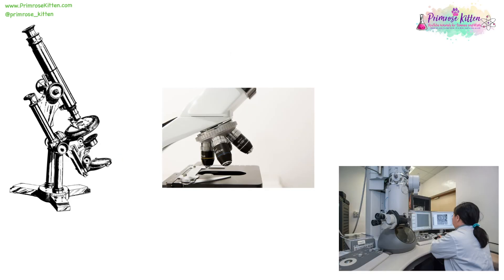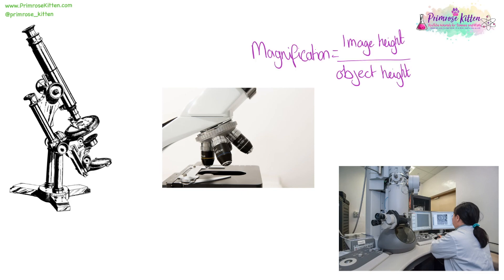Microscopy techniques have varied wildly over time — from the very basic starts, where you had your lenses and you had to use the focus to see what was going on, all generally hand done, very basic — to ones that you're probably more familiar with in school, which have slightly more sophisticated lenses — to the massive ones, electron microscopes, where they're all controlled by computer. If you want to work out image height, object height, or magnification from an image taken from a microscope, the calculation is: magnification equals image height over object height.